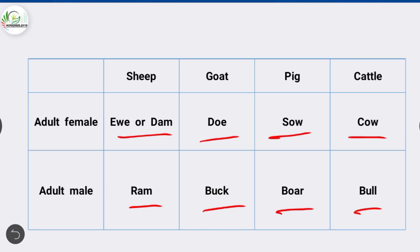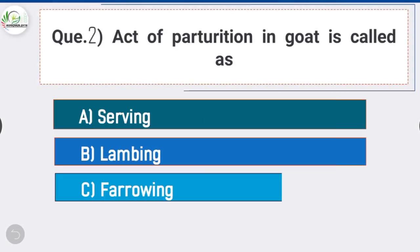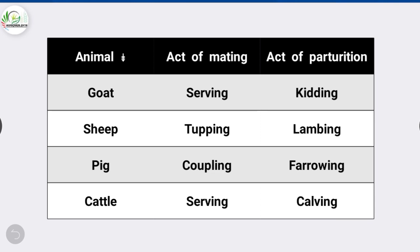Question number two: the act of parturition in goat is called what? The answer is option D - kidding. The act of parturition in goat is called kidding. The act of mating in goat is called serving. The act of mating in sheep is called tupping. The act of mating in pig is called coupling, and the act of mating in cattle is called serving.